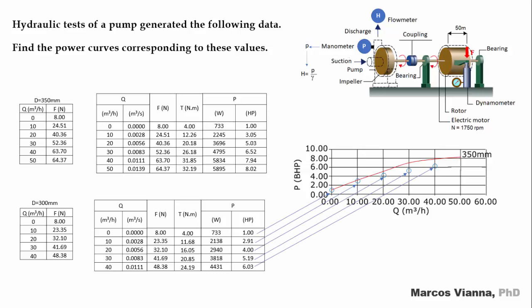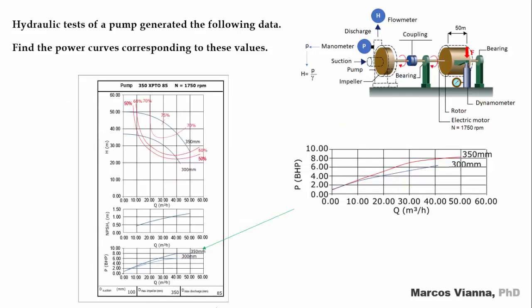Now, we do the same with the points that we found for the other impeller. We mark the graphics with the values of power that we found. There they are. Join them by a line. And there is the curve that we are looking for. Here are the curves that we found in the pump chart.